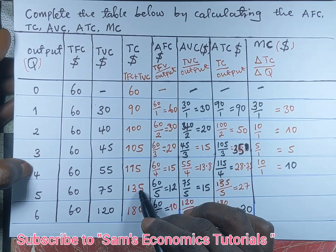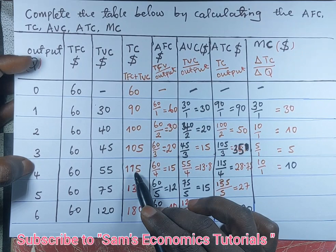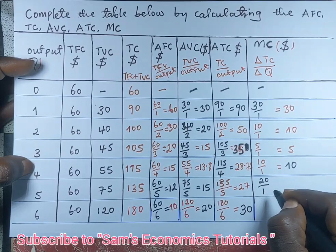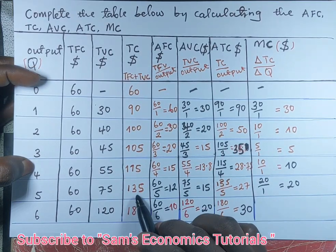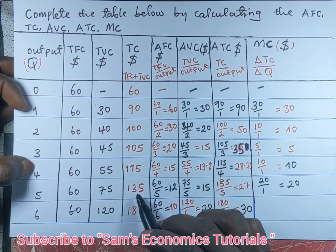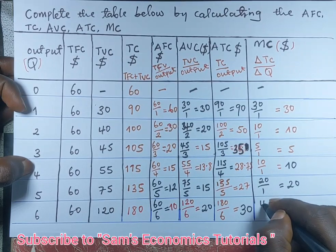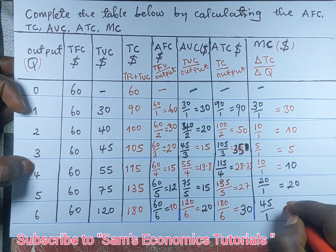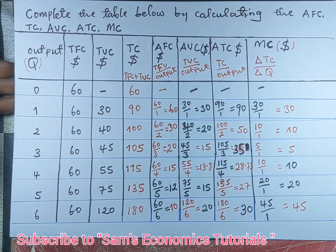When total cost increases from 115 to 135 and quantity increases from four to five, that's a difference of 20, so we divide 20 by 1, giving marginal cost of 20. Lastly, when total cost increases from 135 to 180, the difference is 45, so we divide 45 by 1, giving marginal cost of 45. See you in our next video.